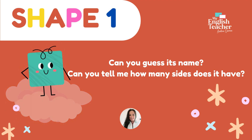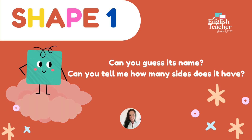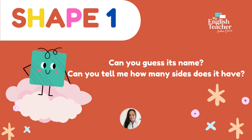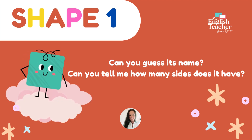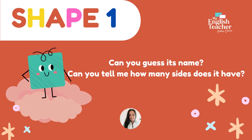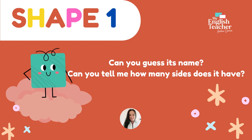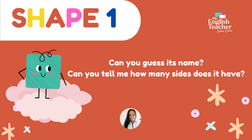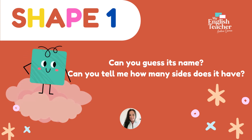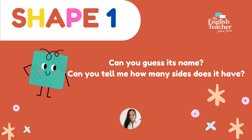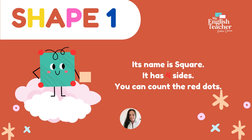Shape 1. Can you guess his name? Can you tell me how many sides does he have? Take your time. Ok, let's find out. His name is Square. It has 4 sides. You can count the red dots.